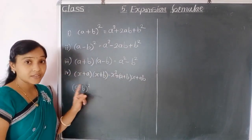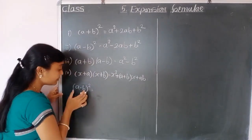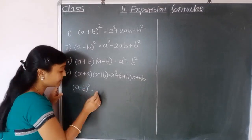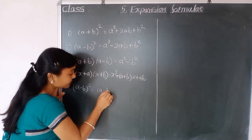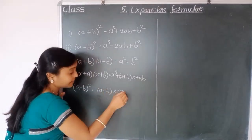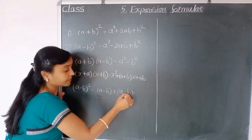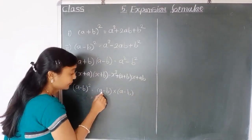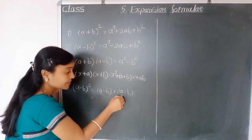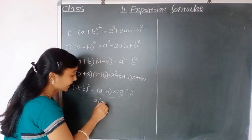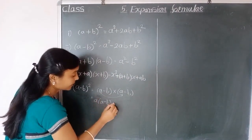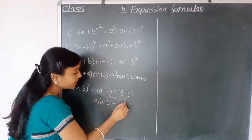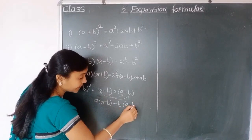a minus b bracket squared means this bracket multiplied into itself: a minus b, into again a minus b. So we multiply this bracket into this bracket. First we multiply a with the bracket, a into a minus b, and again minus b multiplied to this bracket, minus b into a minus b.